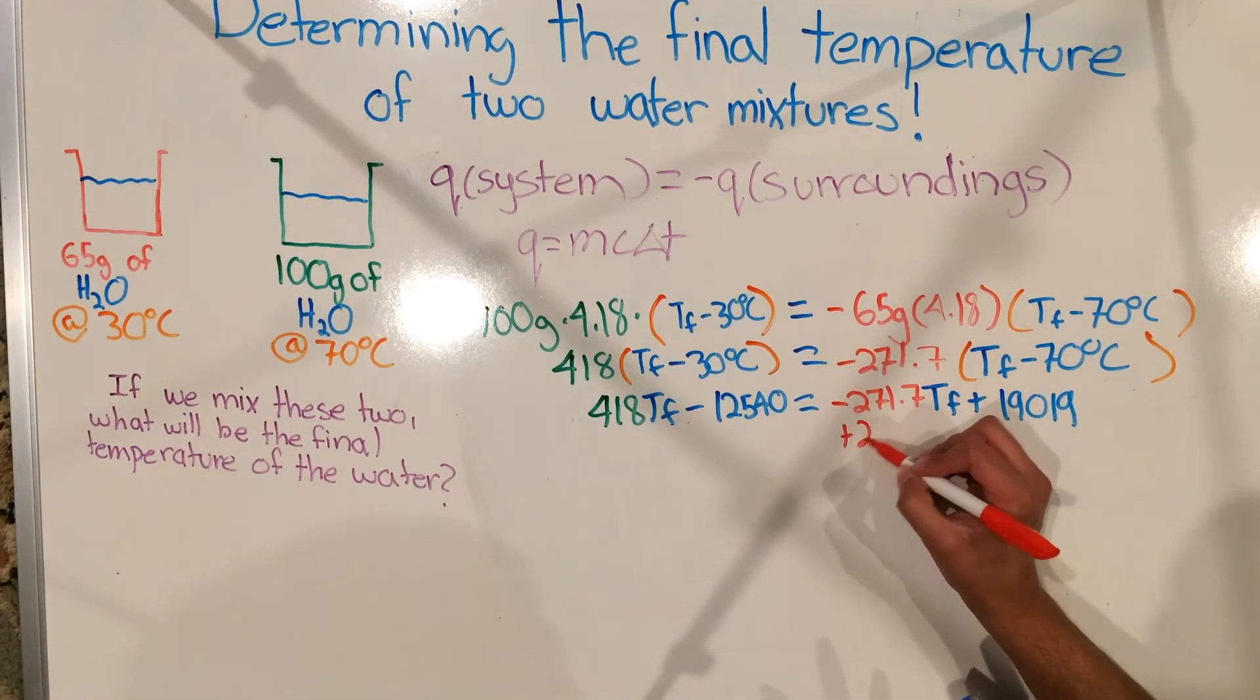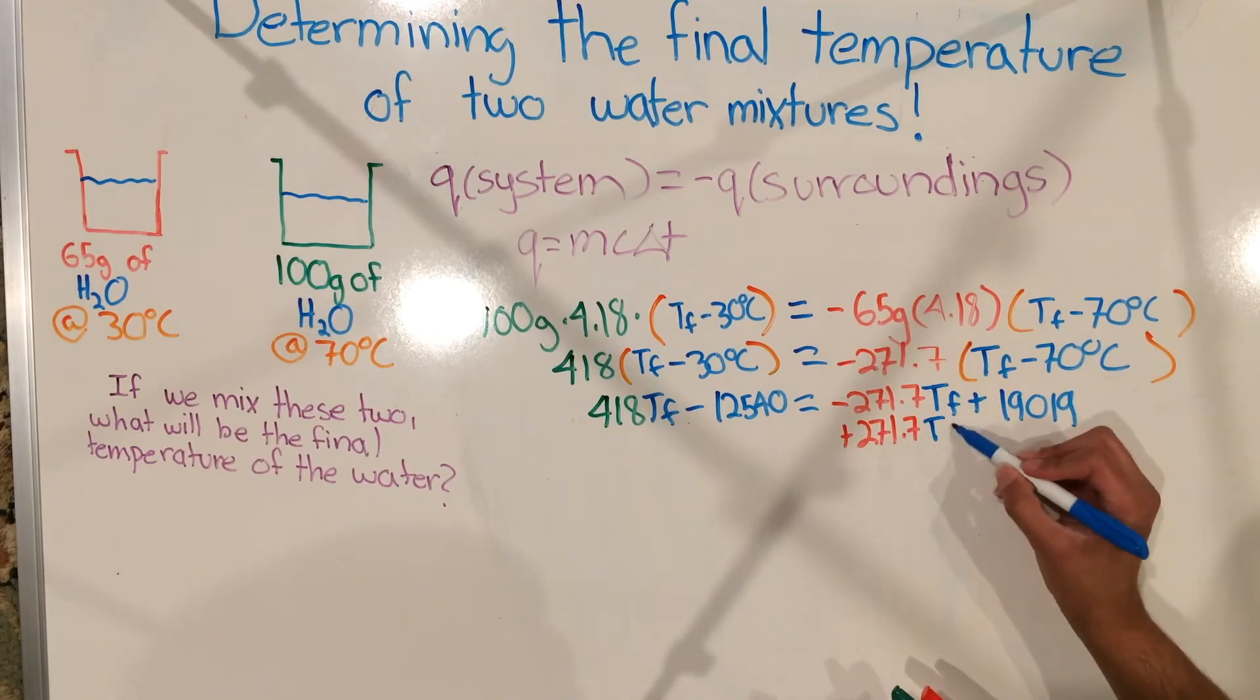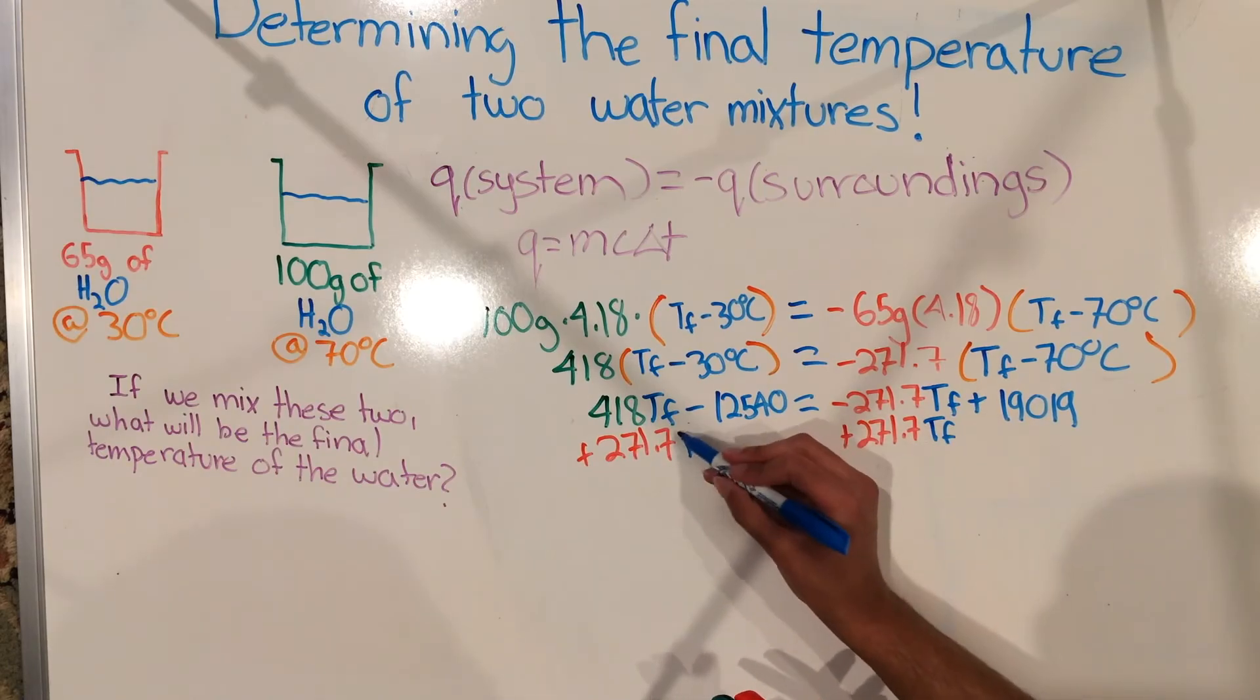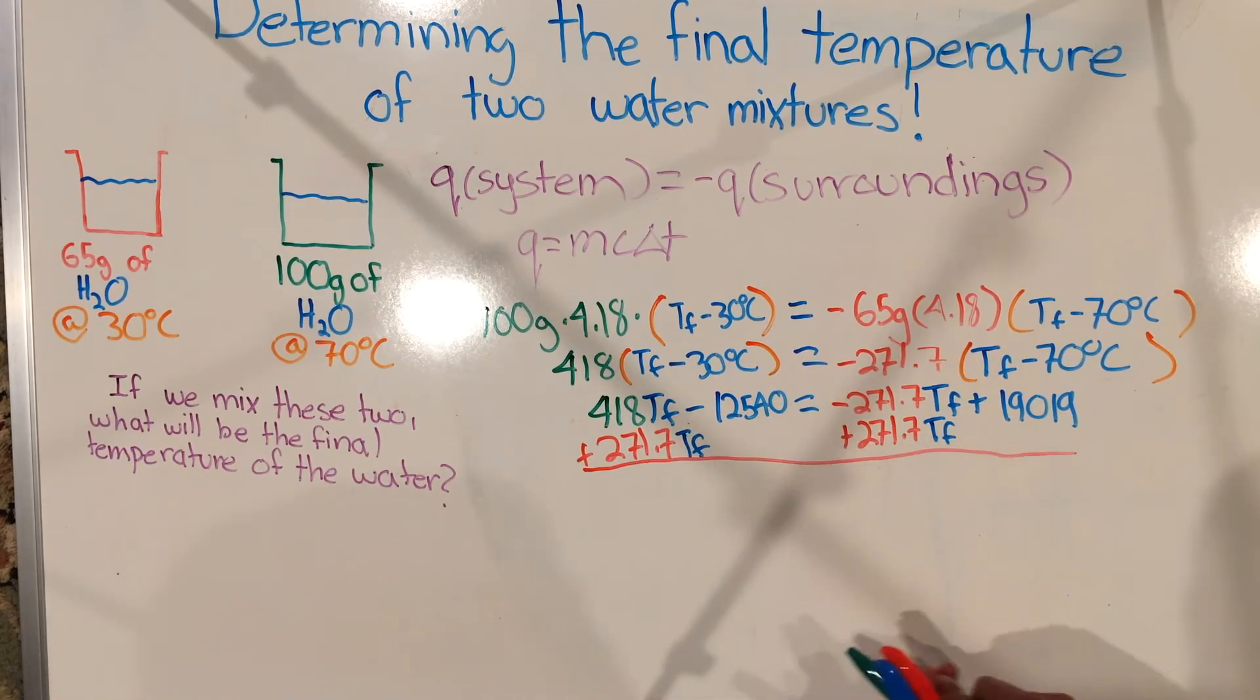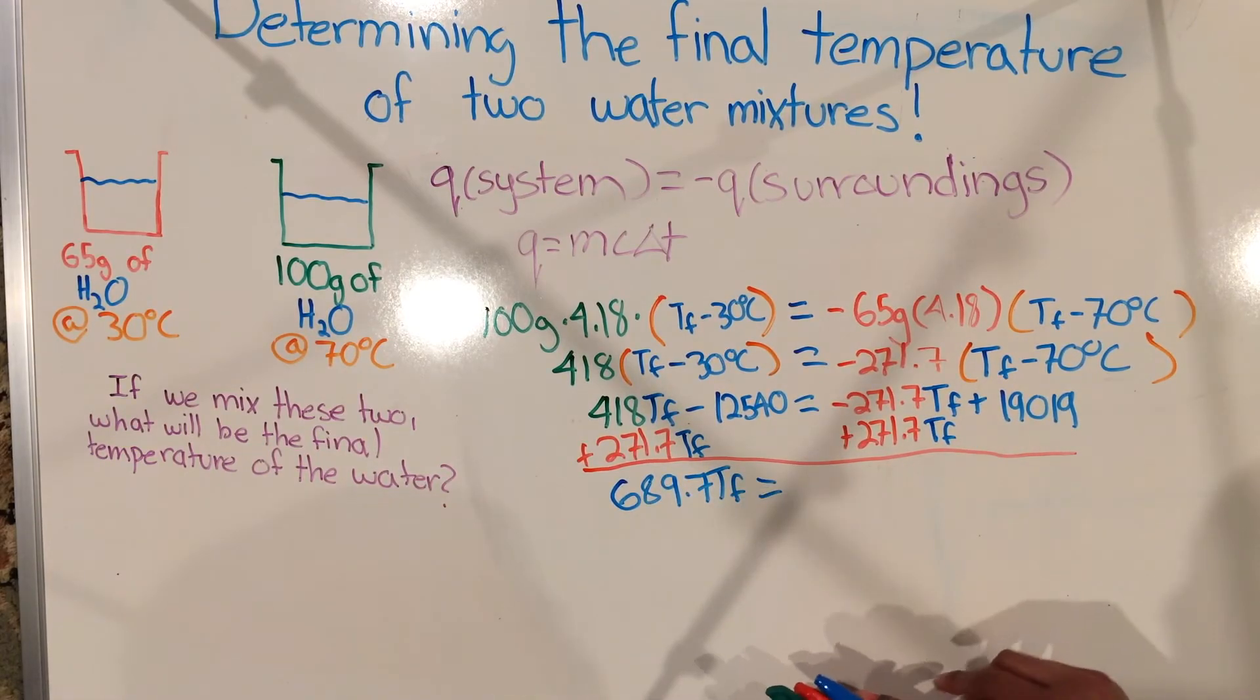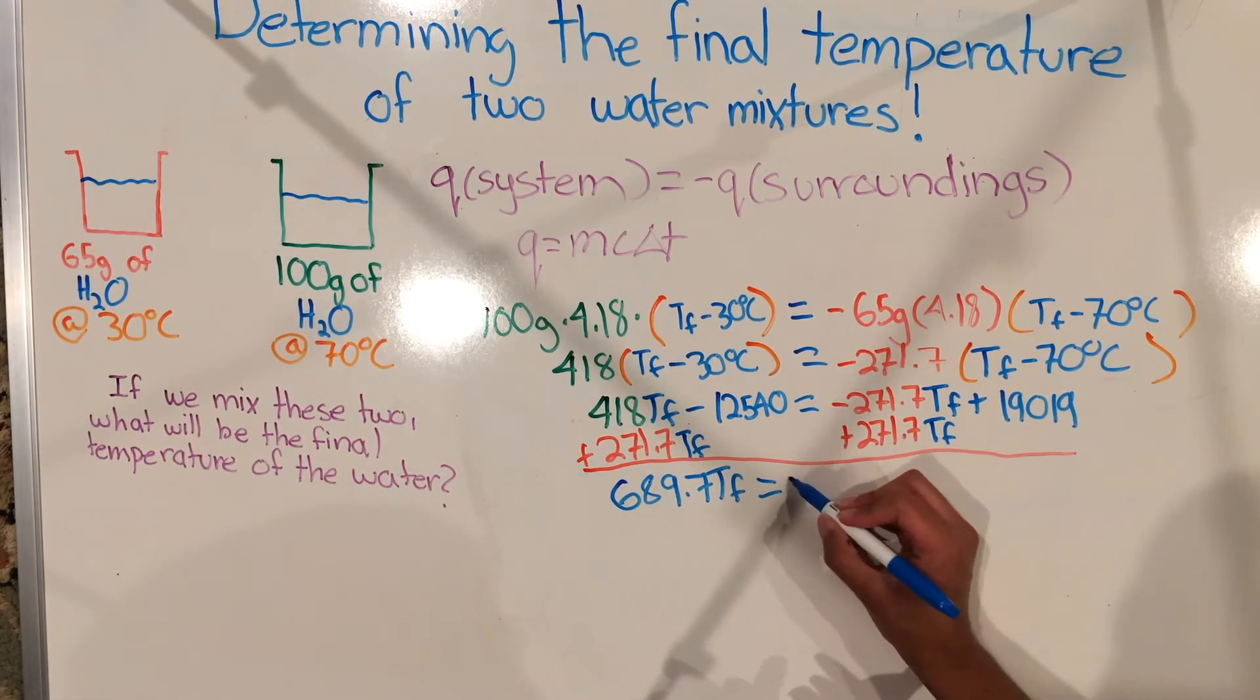After that, we add 12,540 to both sides and we add 271.7 times the final temperature to both sides. And we get a final result that says 689.7 times the final temperature is equal to 31,559.